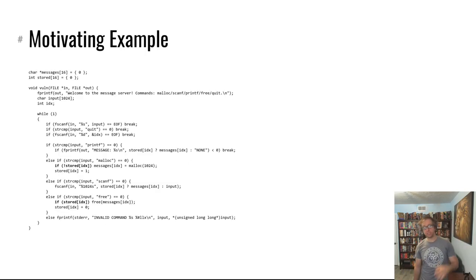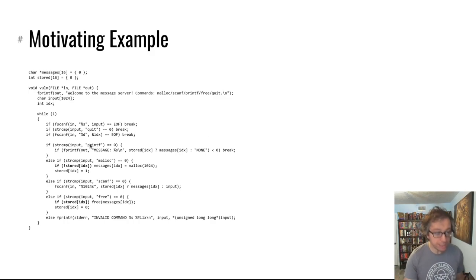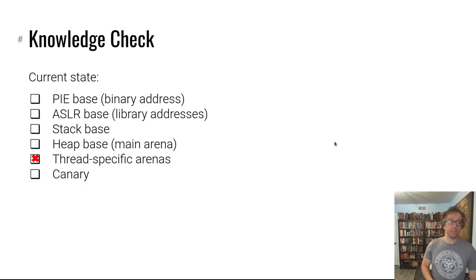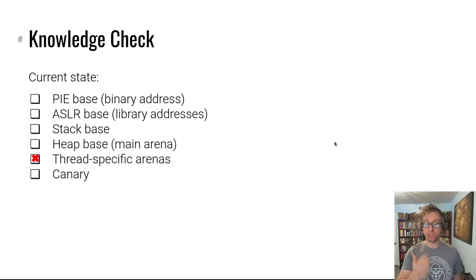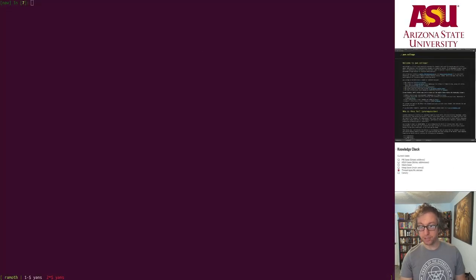As a reminder, we're still talking about the same threading message server where you can connect in, leave messages, retrieve messages, and it uses the heap safely in a single-threaded scenario but with multiple threads problems occur. And as a reminder, in the last video we leaked the address of the per-thread struct which is in the thread-specific arena of that process.